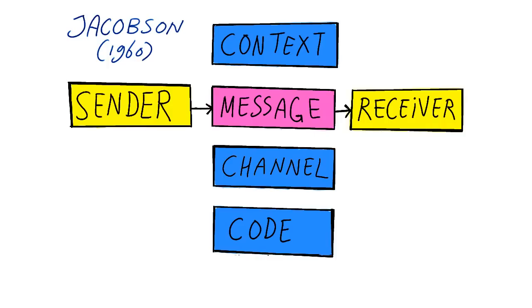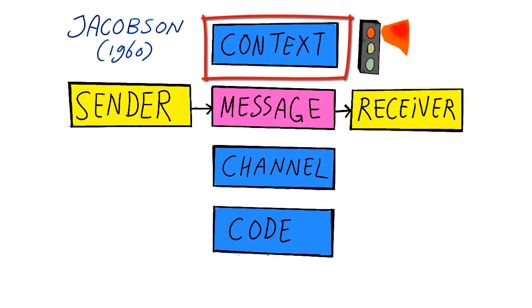Each message, according to the Jacobson model, refers to something outside of the message, a context. A red traffic light refers to the concept of stopping. A love letter refers to the concept of love.